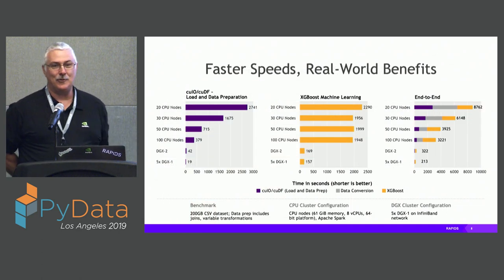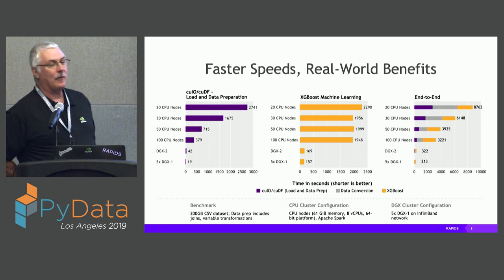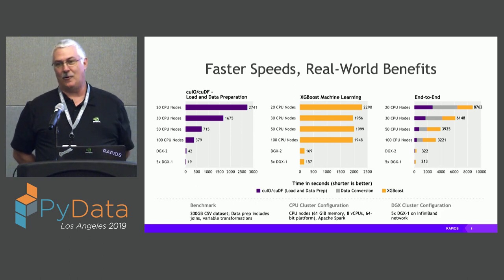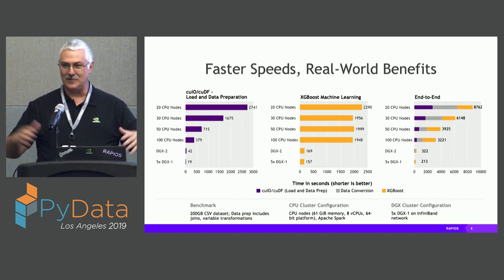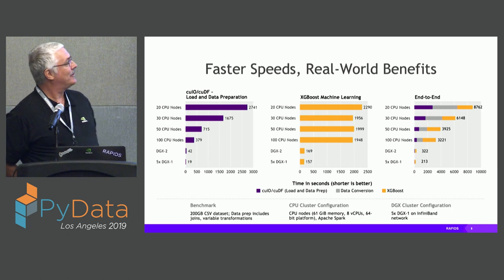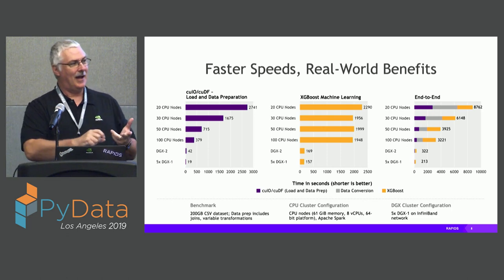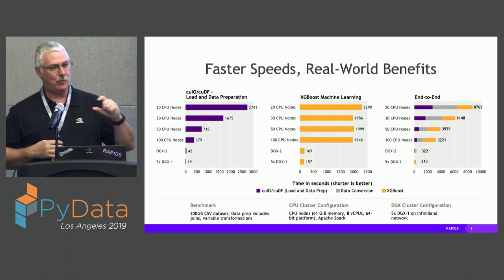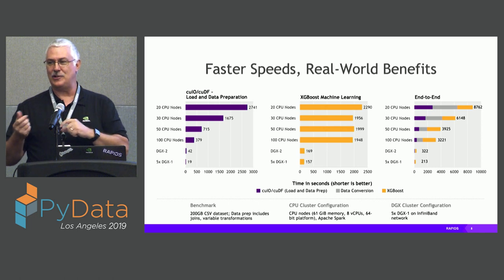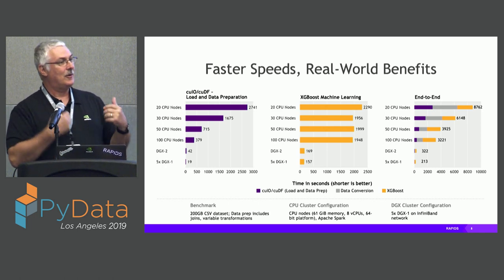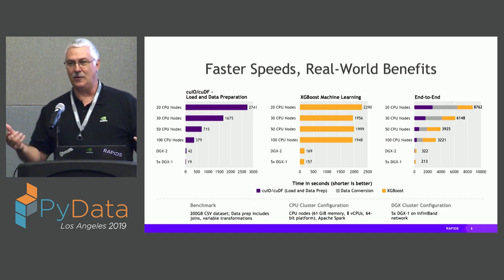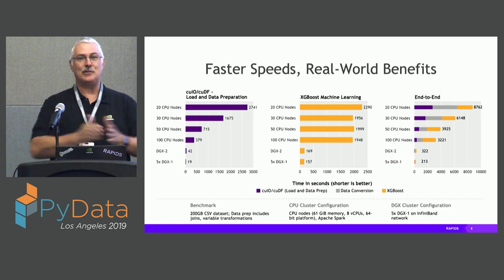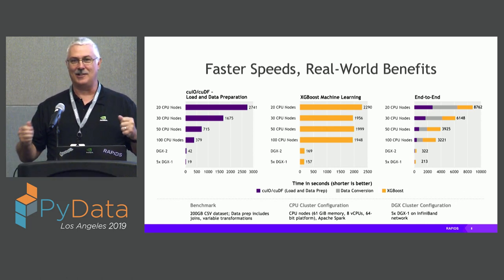Let's jump into how fast RAPIDS really is. We took mortgage data from Fannie Mae — multiple years, 200 gigabytes of data on disk. We had to load the data, fix bank names that Fannie Mae couldn't spell correctly, do a 12-month rolling window over the data to look at how well mortgages are doing, which produces three new columns. We then pass those columns into XGBoost, train the model, and predict whether new mortgages will fail — yes or no. Pretty standard data science workflow.